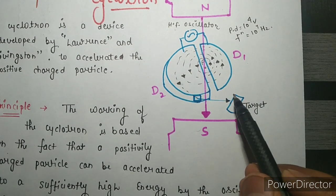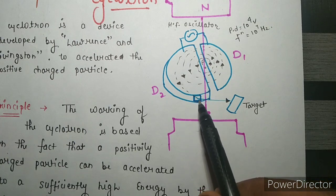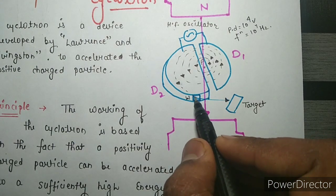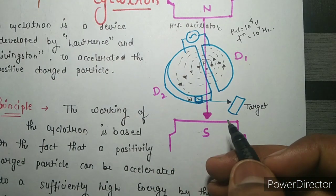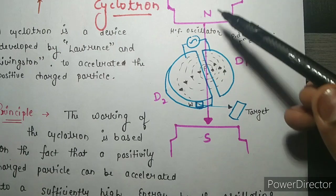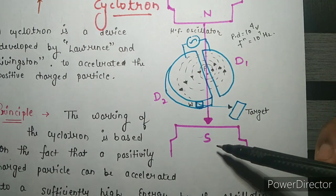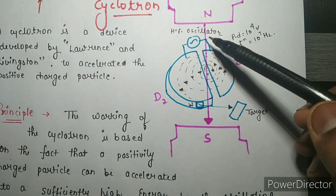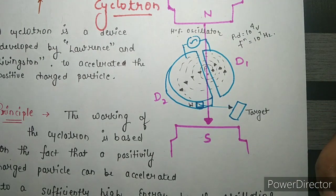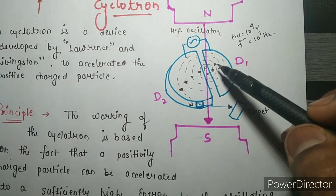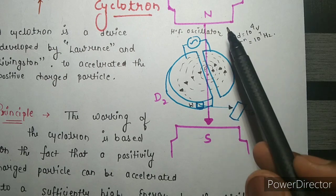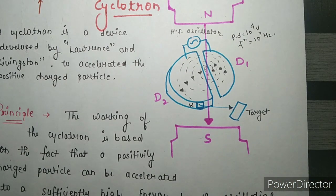There is a target at which we collide the particle after it attains a higher velocity near the speed of light. There is a window W through which the particle exits from the hollow dee. The north and south poles of the magnets provide a very strong magnetic field acting inside between the dees, and these dees are placed perpendicular to the magnetic field. This is the basic construction of the cyclotron.